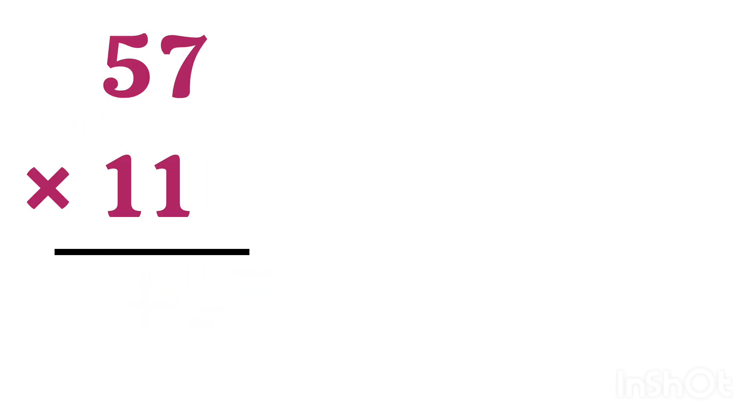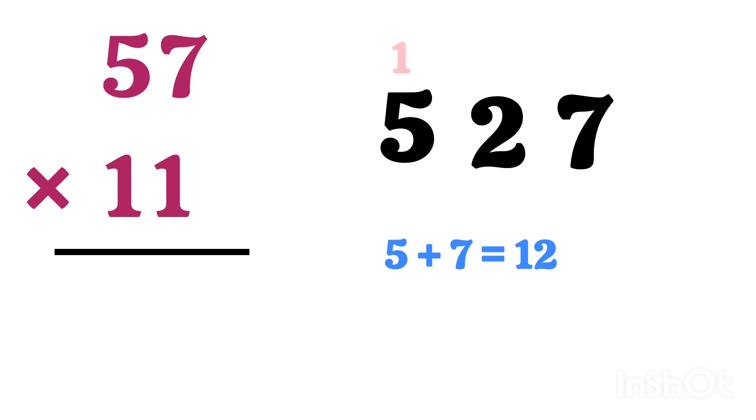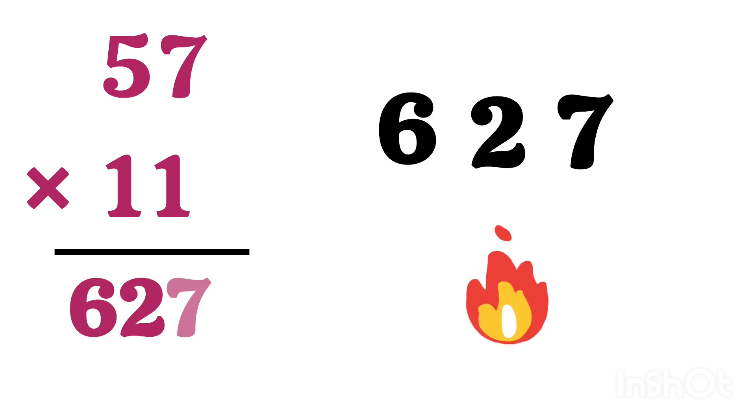Let's take another example which is 57 by 11 and repeat the same process. Take this 5 first, then 7, and in between 5 and 7, add these two numbers. 5 and 7, it becomes 12. So write 2 here and take 1 to the carry and add with 5, it becomes 6. Yes, so our answer is 627.